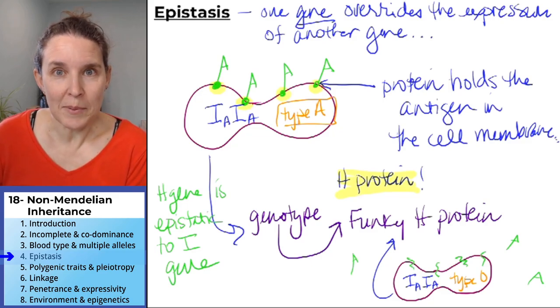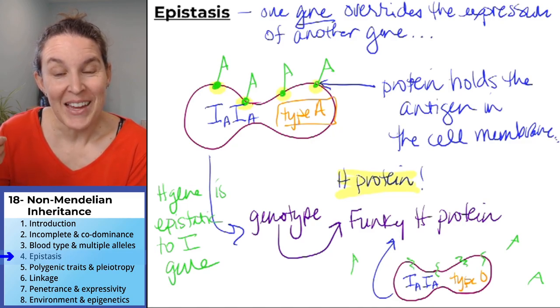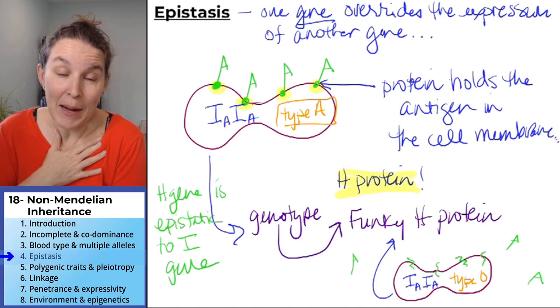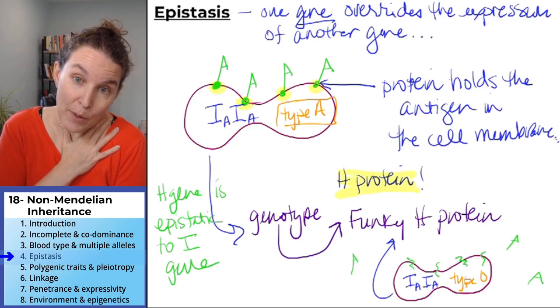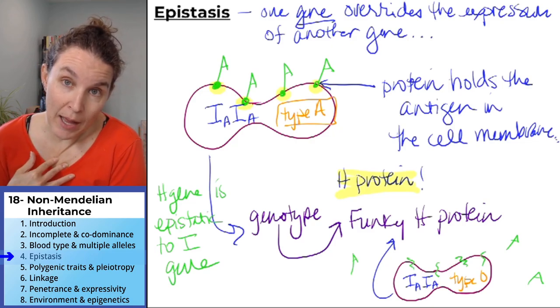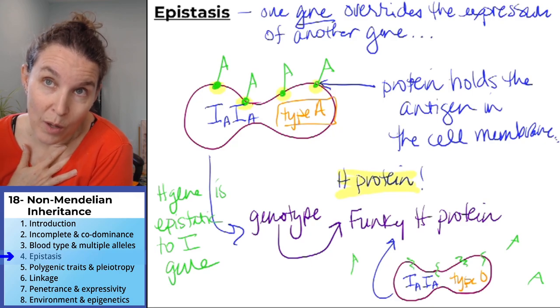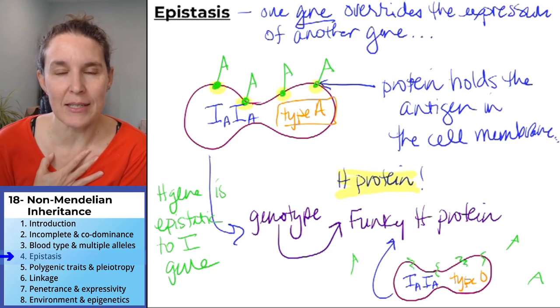Well, you might be able to tell, but there's complications and you might think like my parents are both A, B, why am I O?